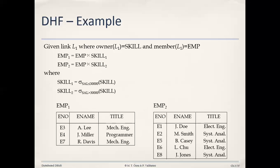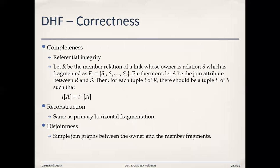After applying DHF, emp1 contains three rows: e3, e4, and e7, while emp2 contains five rows: e1, e2, e5, e6, and e8. In this way we have fragmented the employee relation on the basis of skills using derived horizontal fragmentation.